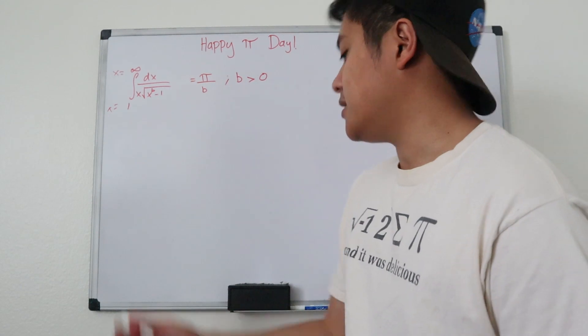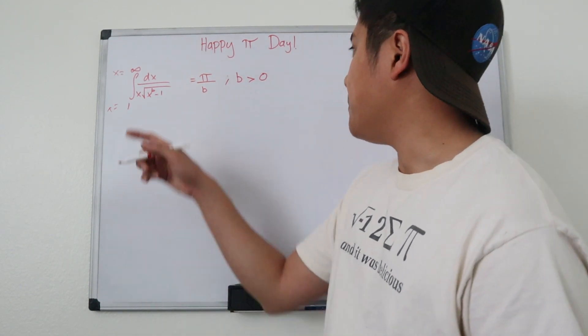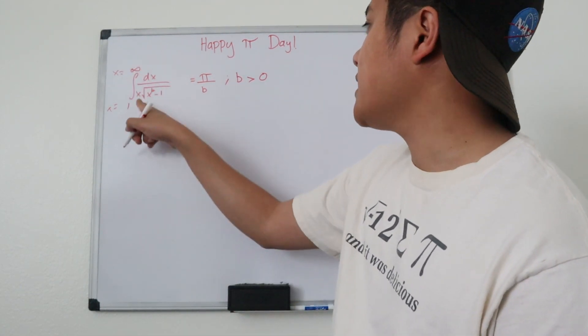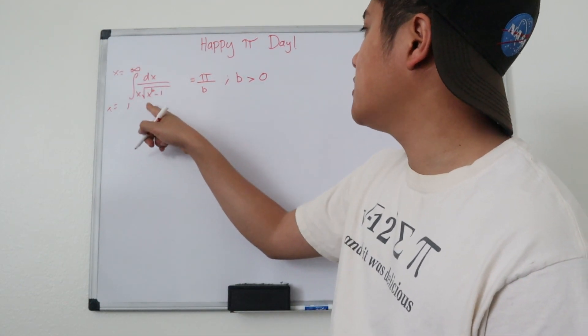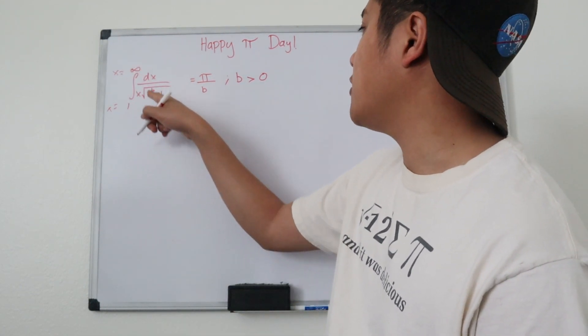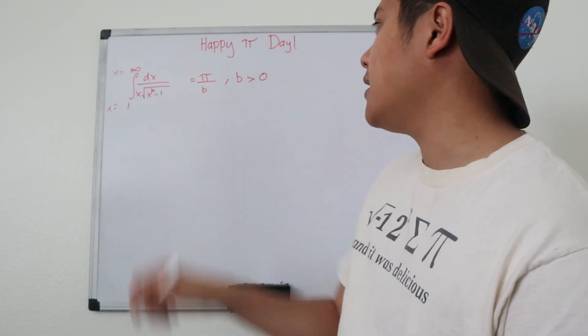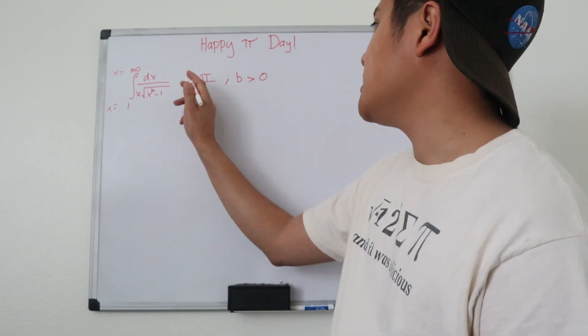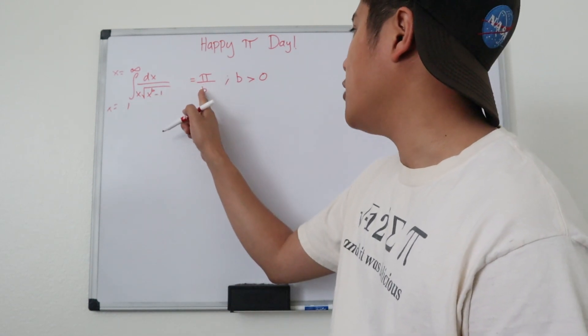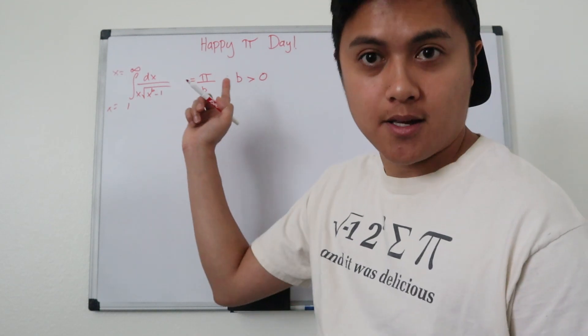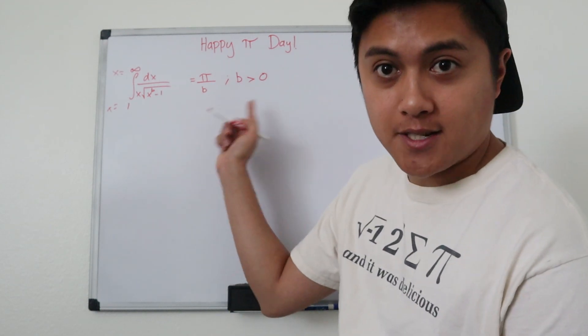This integral is the integral from 1 to infinity of dx divided by x times the square root of x to the b minus 1. We're going to show that this is equal to pi over b, as long as b is greater than 0.